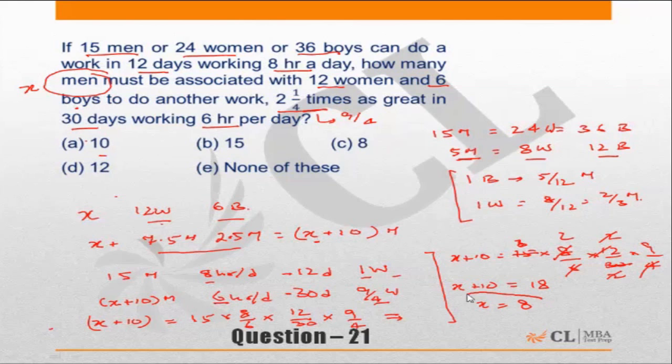In other words, x should be equal to 8, or the number of men extra required is equal to 8. Now, if in this question you had not taken x to be the number of men only, but you had taken x to be all of them, then you could have marked the answer 'none of these,' which is choice E, because then you would be looking for 18. This is why you should always take x as the variable which you need to actually find. In this question we need to find the number of men, so we took x to be number of men only.